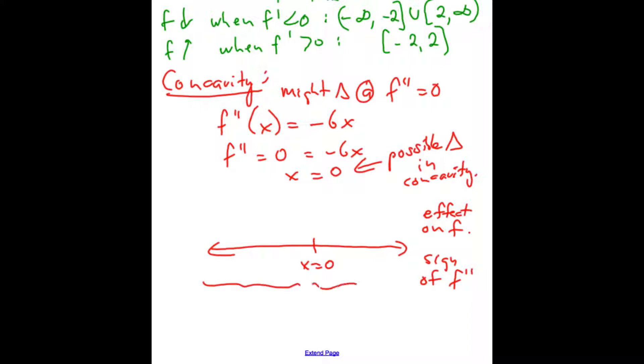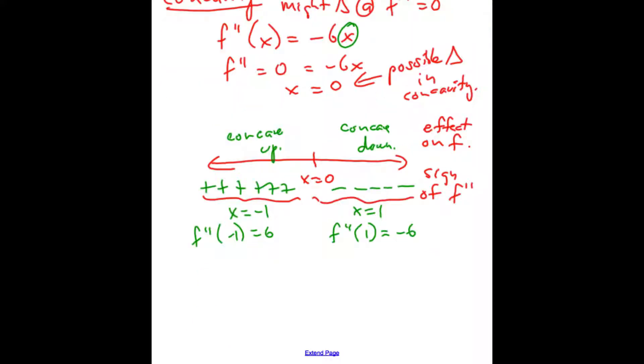So I've got two intervals to test. Let's test x equals negative 1 into my first derivative. f double prime of negative 1 would be 6, which means we get a positive second derivative. And if I look back at what I talked about earlier, that means that the original graph in this section is concave up. And here at x equals 1, the second derivative would be negative 6. A negative second derivative means I'm concave down.